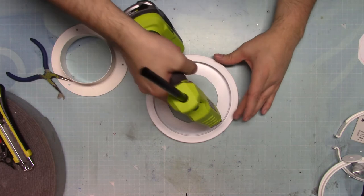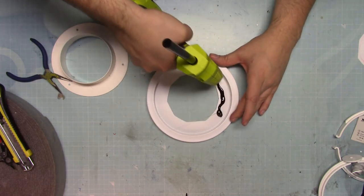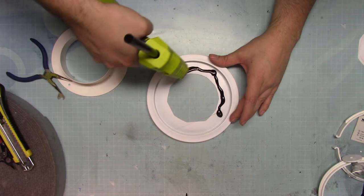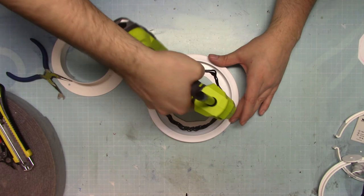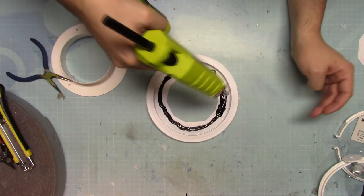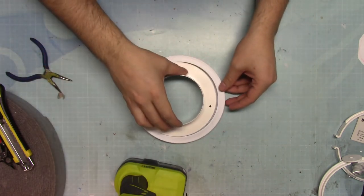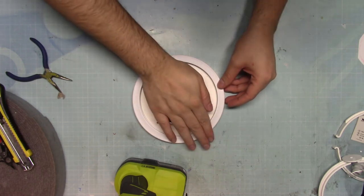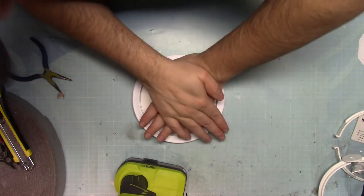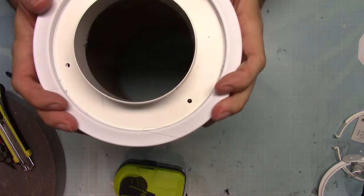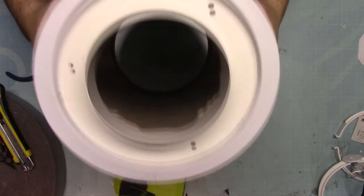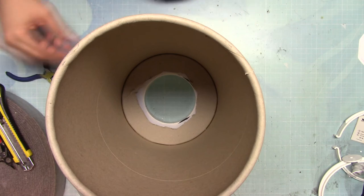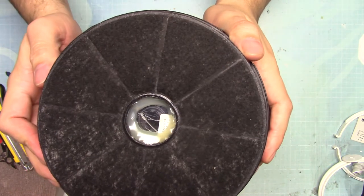Now just place a line of hot glue around here. Press that down. Now this can attach here and we have our entrance. And this will be the exhaust side where the filter will sit right there.